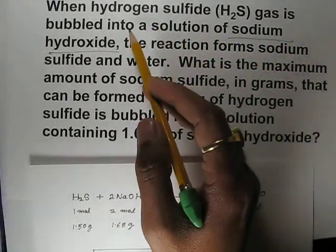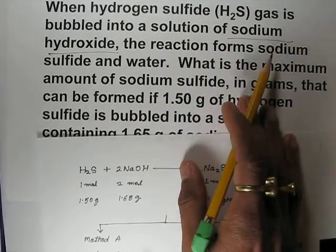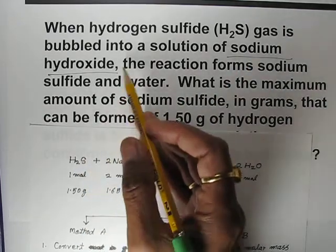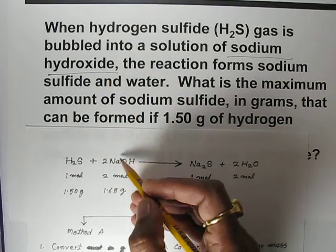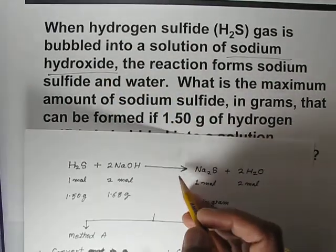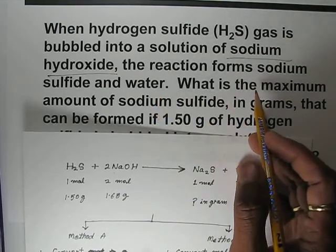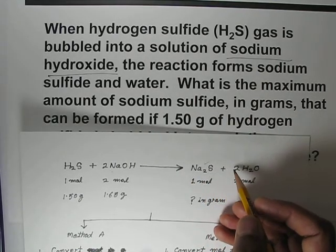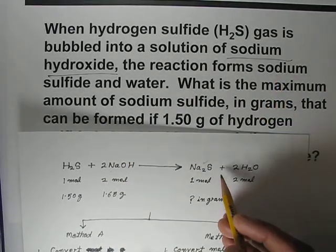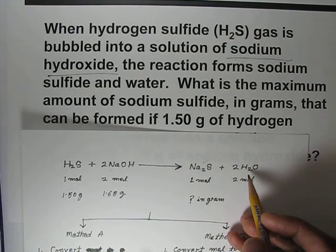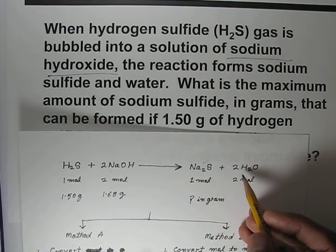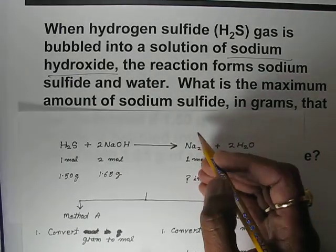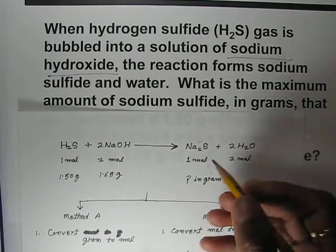To solve this question, first you have to find the molecular formula for each chemical named. Hydrogen sulfide gas H₂S is already given. Sodium hydroxide is NaOH. The reaction forms sodium sulfide — you have to find out the molecular formula for this ionic compound — and water. They are asking for the maximum amount of sodium sulfide, which means they are asking for the theoretical yield.